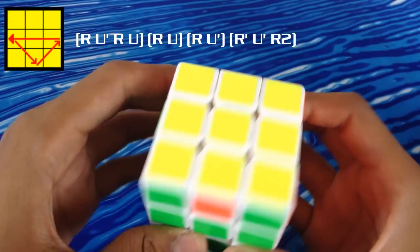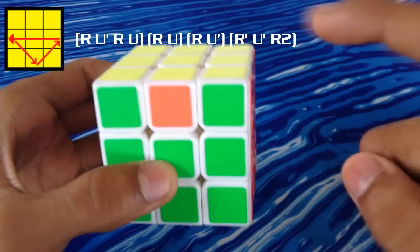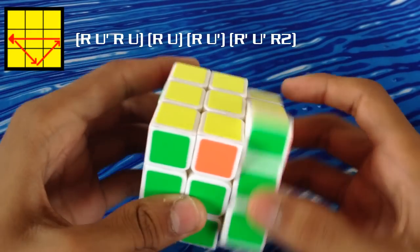At number 2 we have this case which is exactly the same as the 3rd case except this piece has to go this way. So we apply this algorithm.